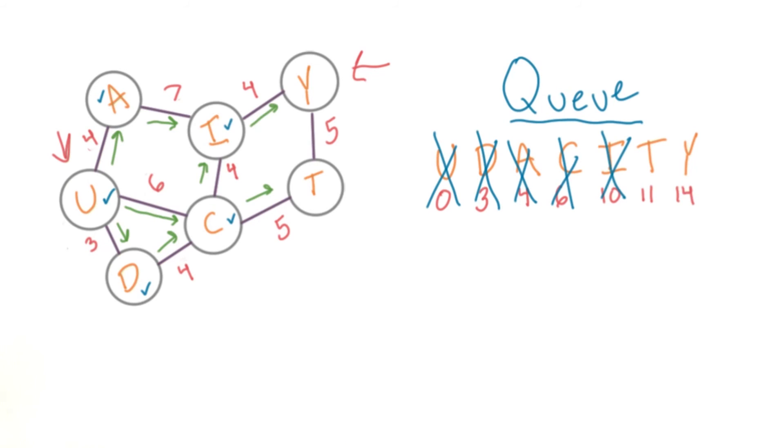Until the node we're looking for has been extracted from the queue, or everything else has a distance of infinity, which means the path we're looking for doesn't exist.